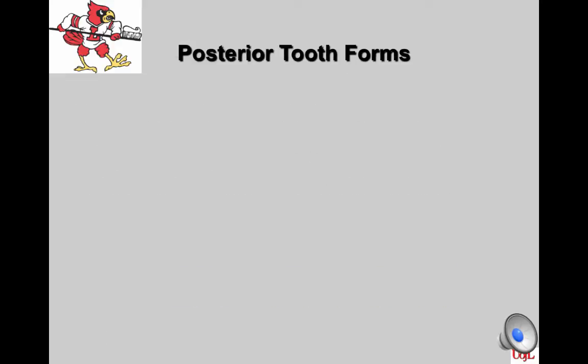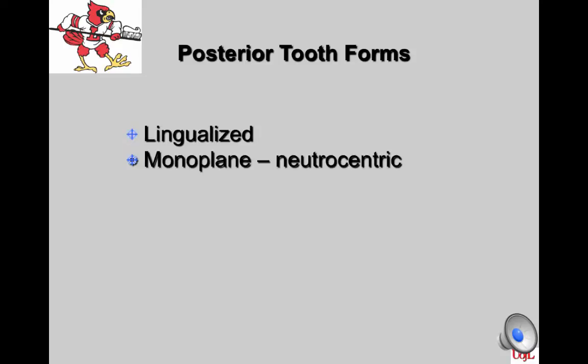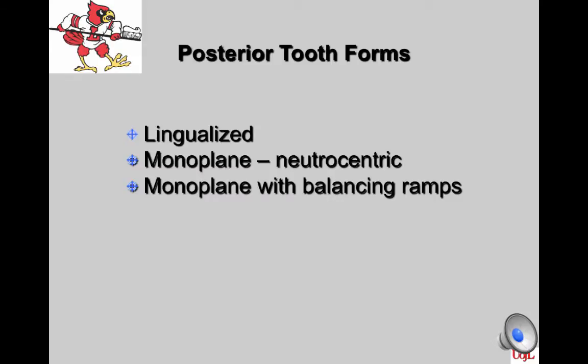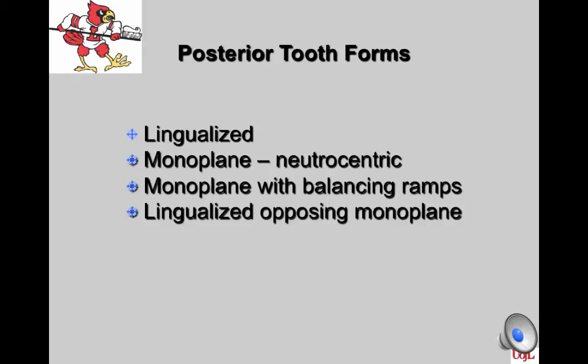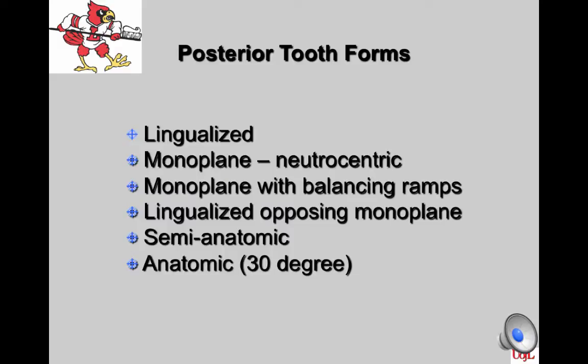There are several posterior tooth forms available: lingualized teeth, monoplane with the neutrocentric concept, monoplane with balancing ramps, lingualized opposing monoplane versus anatomic teeth, semi-anatomic teeth opposing one another, and anatomic teeth opposing one another. We need to know the indications for which to use and when.